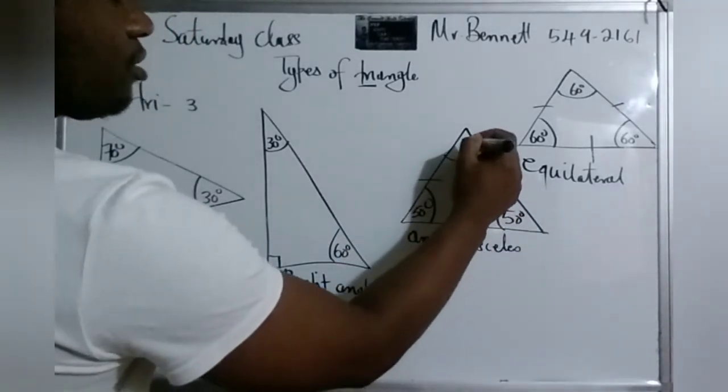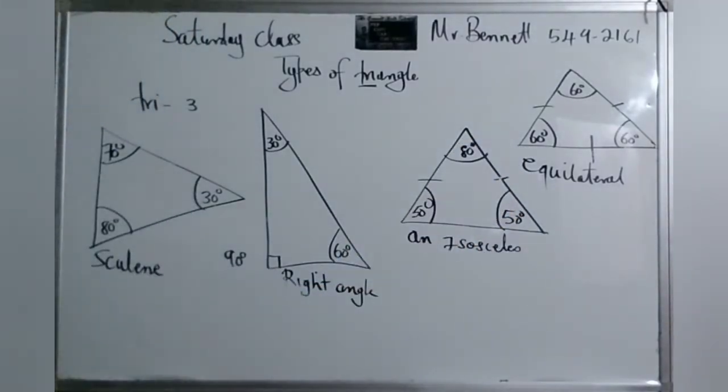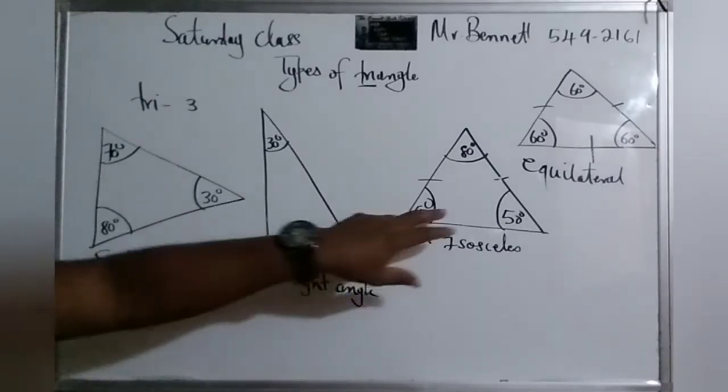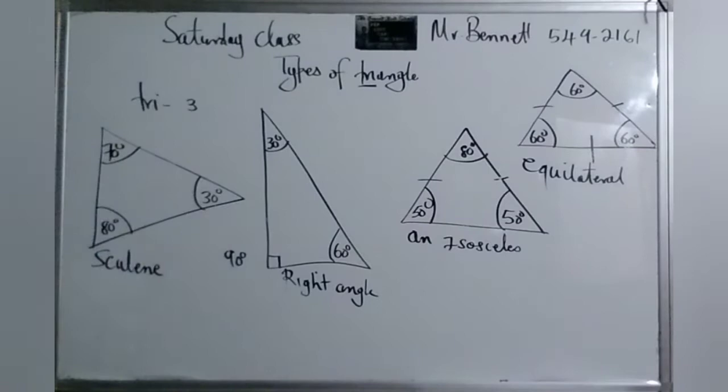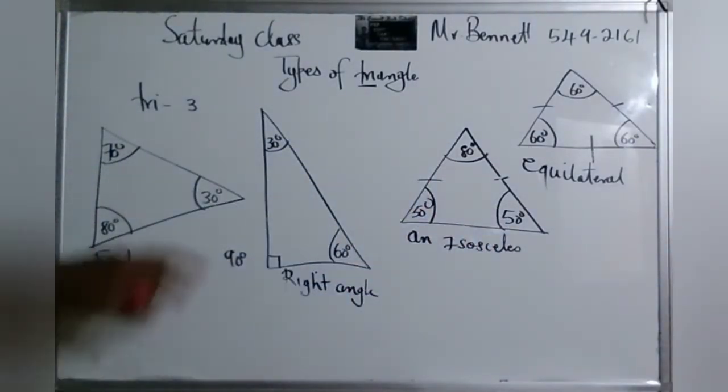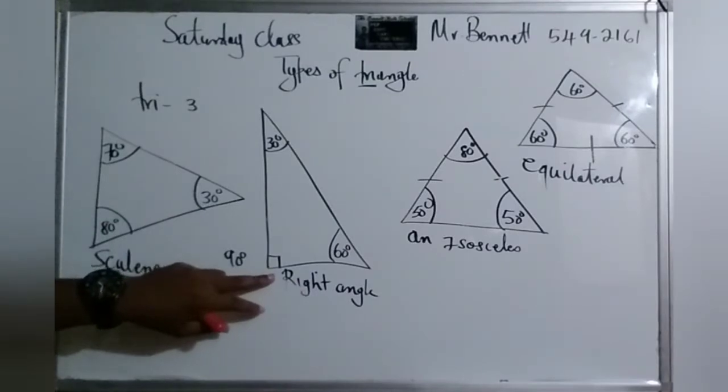So the base angles are equal. So every triangle, different thing about them. So the equilateral, all sides equal, all angles equal. And isosceles, only the base angles are equal. And the length. See? And then now, the right angle, one is equal to 90 degrees.